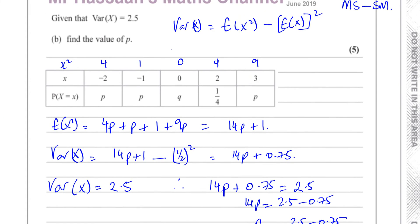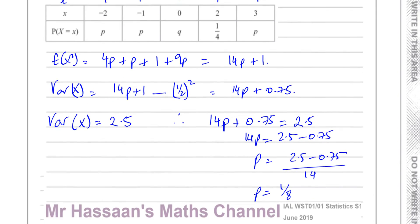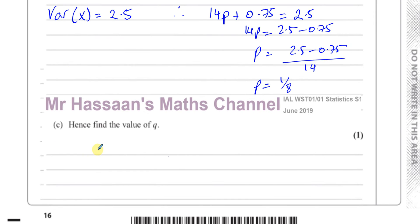That's part B done. Then it says: hence, find the value of Q. To find the value of Q, we should realize that all of the probabilities add up to 1.